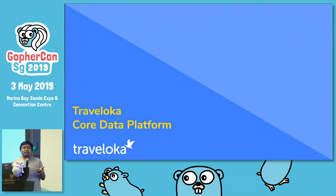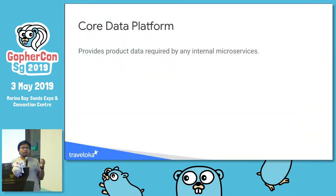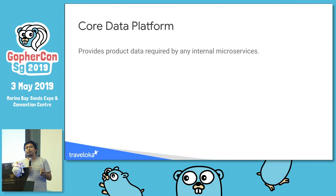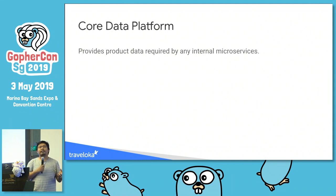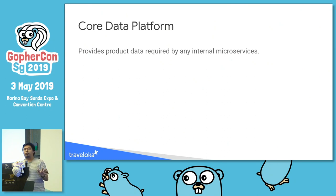I'll tell you a bit about Traveloka Core Data Platform — the team I work on. Core Data Platform, or CDP, basically helps other internal microservices in Traveloka to provide data. Imagine the flight team needs data about hotels or other product types — they go to the data team, and we provide them with data using APIs.